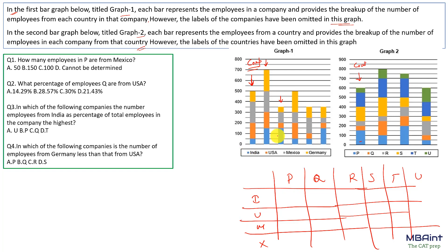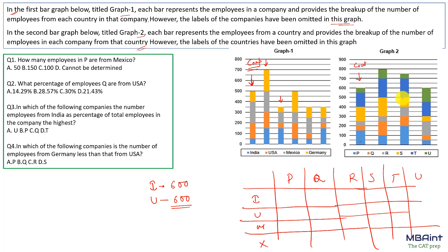Let us calculate the number of employees in each country. In India, if we sum all the blue regions, we get: 50 + 150 + 200 + 150 = 350 + 50 = 400 + 50 = 450 + 150 = 600. So the number of employees in India is 600. Now summing the orange region for USA: 150 + 150 = 300 + 50 = 350 + 150 = 500 + 50 + 50 = 600. So the number of employees in USA is also 600. This means in Graph 2, two graphs sum up to 600 — India can be either one, and the opposite would be USA.